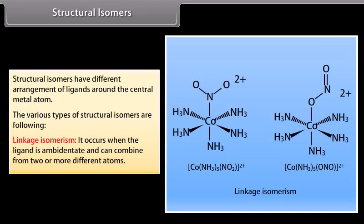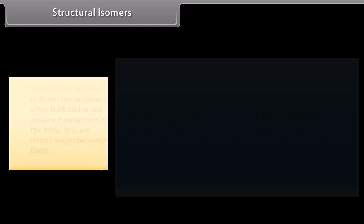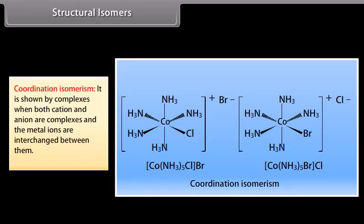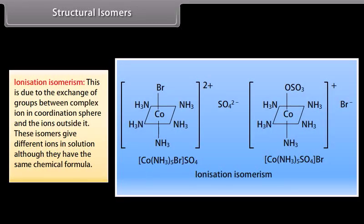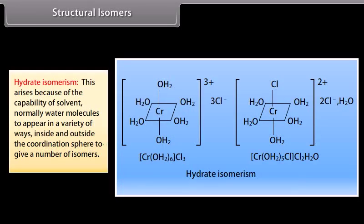Structural isomers have different arrangements of ligands around the central metal atom. Types include: Linkage isomerism — occurs when the ligand is ambidentate and can combine from two or more different atoms. Coordination isomerism — shown by complexes when both cation and anion are complexes and the metal ions are interchanged between them. Ionization isomerism — due to exchange of groups between complex ions in the coordination sphere and the ions outside it; these isomers give different ions in solution. Hydrate isomerism — arises because water molecules can appear inside and outside the coordination sphere in various ways.